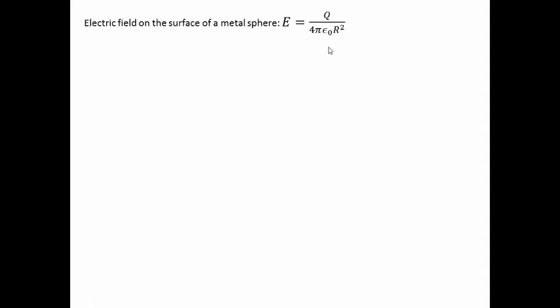4πε₀ is just a constant term and R is the radius of the metal sphere. Now we compare this to the equation of the potential on the surface of the metal sphere due to the same charge and same radius. The formula is given as Q over 4πε₀R.